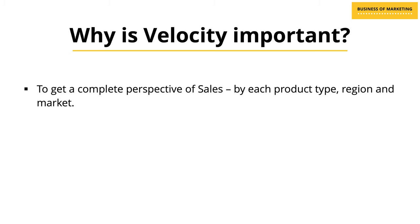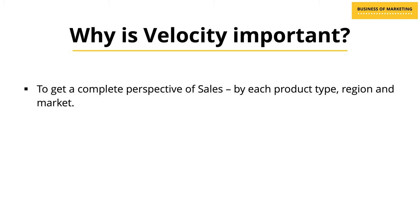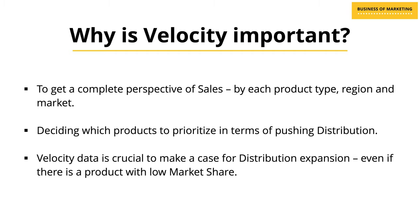Velocity helps you get a complete perspective of sales by each product type, by every region, and the overall market. It also helps you decide which products you should prioritize when it comes to distribution push. When you have the velocity data, you can use it to make a case for expanding distribution — even if a product has a low market share, an impressive velocity makes expanding its distribution an easier case to make.